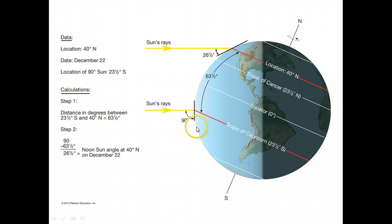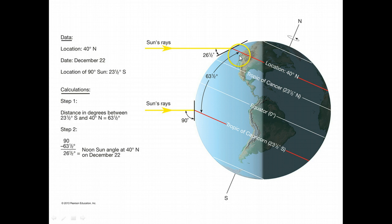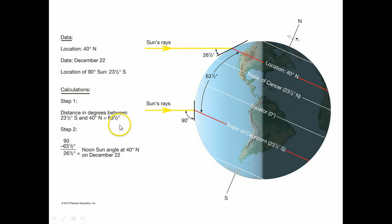That's quite far away from where we are. What we want to know is the distance between our latitude and the sun's vertical rays latitude. We add the two latitudes because 40 degrees north means 40 degrees north of the equator, and 23.5 degrees south means 23.5 degrees south of the equator. So 40 plus 23.5 gives us 63.5 degrees of distance. The last step is to subtract 63.5 from 90, which gives 26.5 degrees — the sun angle on December 22nd at 40°N. The sun appears pretty low, which matches our winter experience.